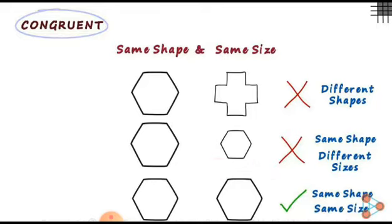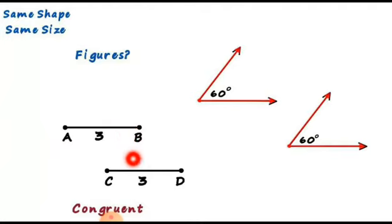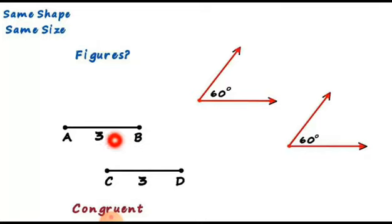Last example: look at these shapes — they have the same shape and the same size, so they are concurrent. Now check these line segments AB and CD. Line segment AB is concurrent to line segment CD because they have the same shape and the same size — both have three units.